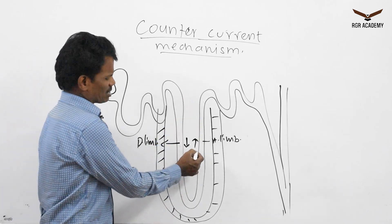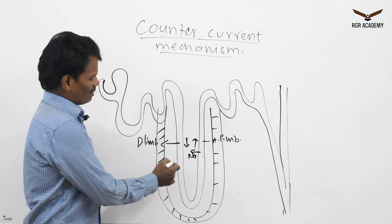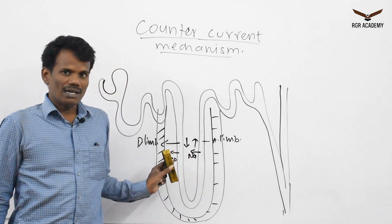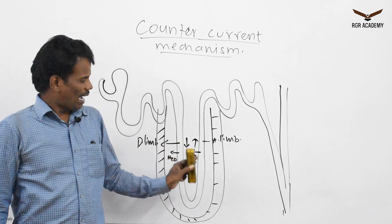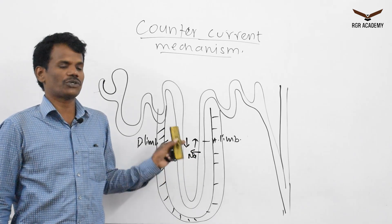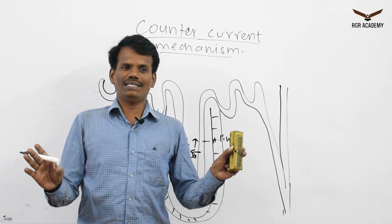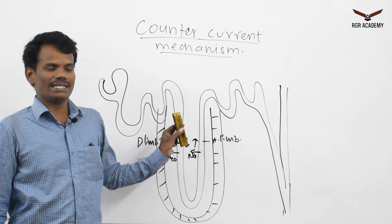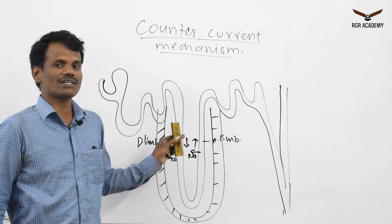The ascending limb permits sodium to come out, and the descending limb permits water to come out. The descending limb will not permit salts to enter, and the ascending limb will not permit water to come out — they are impermeable to water. All tubules or cells of the body are permeable to water, except the ascending limb.